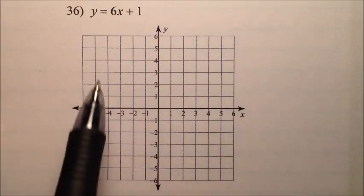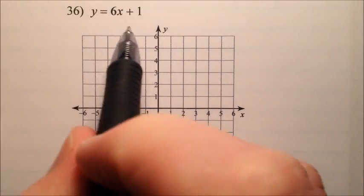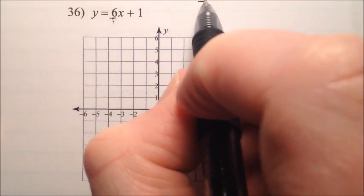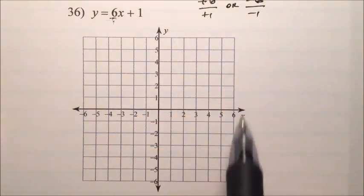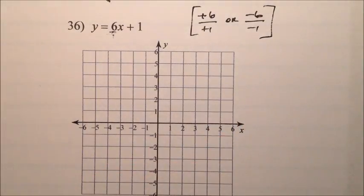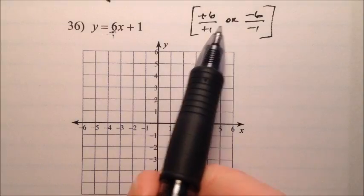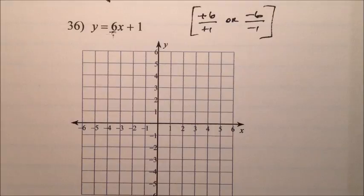And number 36, I have y equals 6x plus 1. So I know the slope is going to be 6, or 6 over 1. So I could write it as a positive 6 over a positive 1, or negative 6 over a negative 1. So both of these slopes would be nice. And again, you can use them because this one's going to propagate points toward the right, and this one's going to propagate points toward the left. Let's go ahead and see what this looks like.